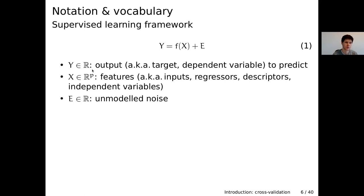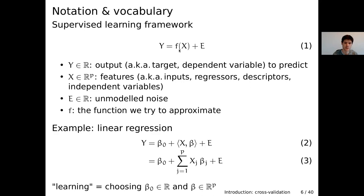To make this prediction, we model Y as a function of X, which are our features, inputs, or regressors — for example, values in an MRI image. We model Y as a function of X plus some random error, some unmodeled noise. Our goal is to estimate the function F that maps the inputs, for example image values, to the target we are interested in, such as the diagnosis.